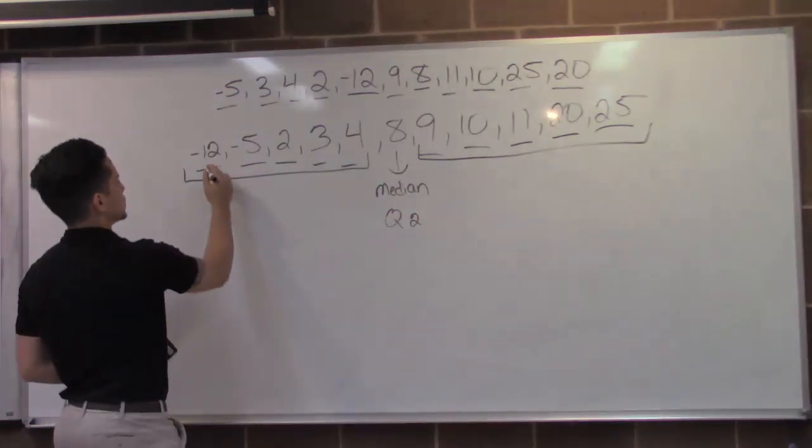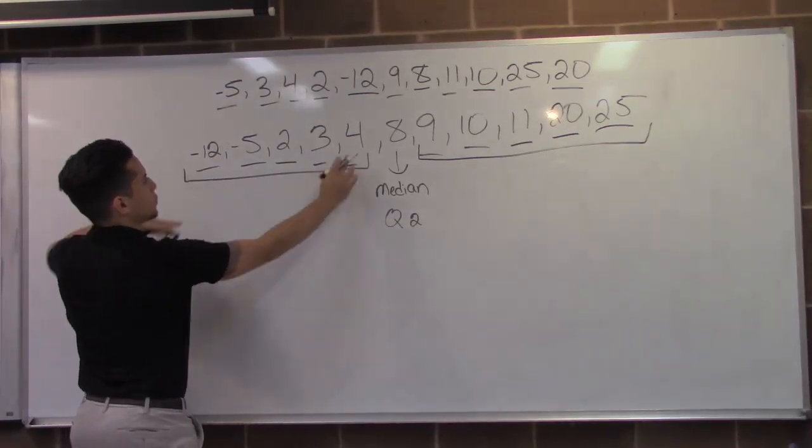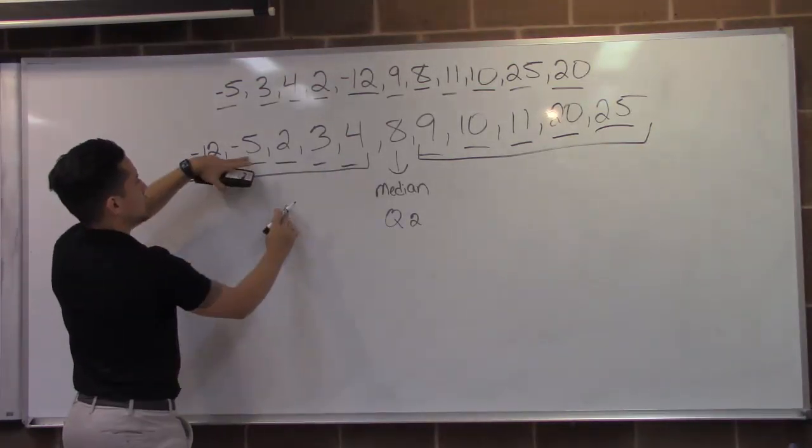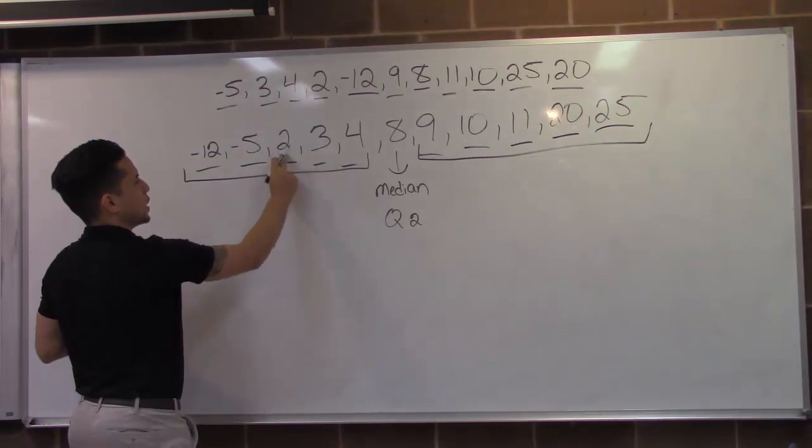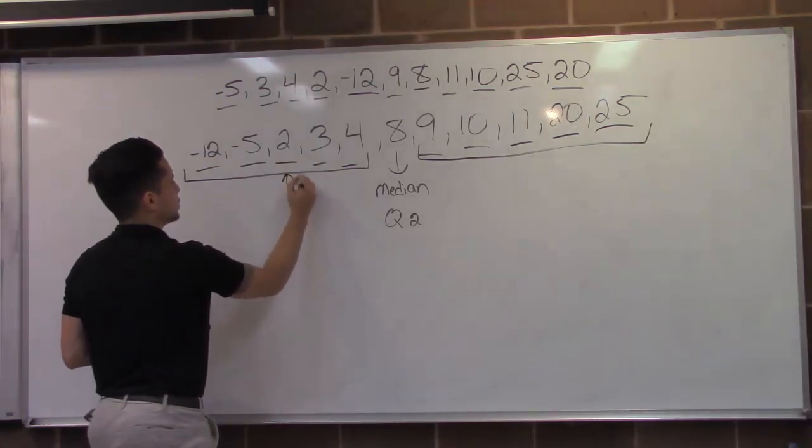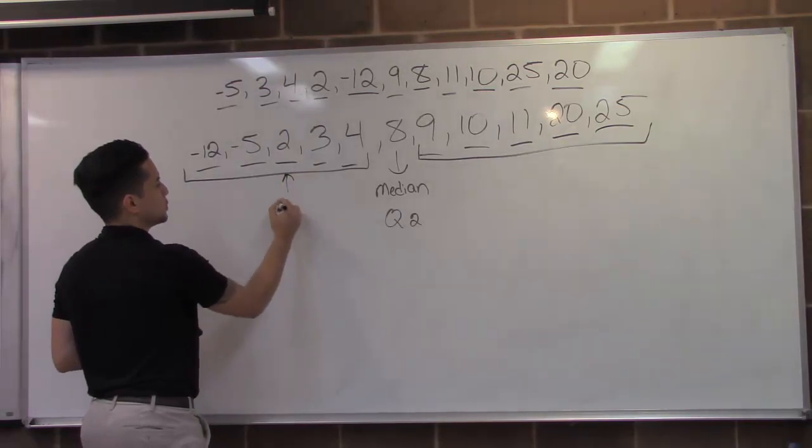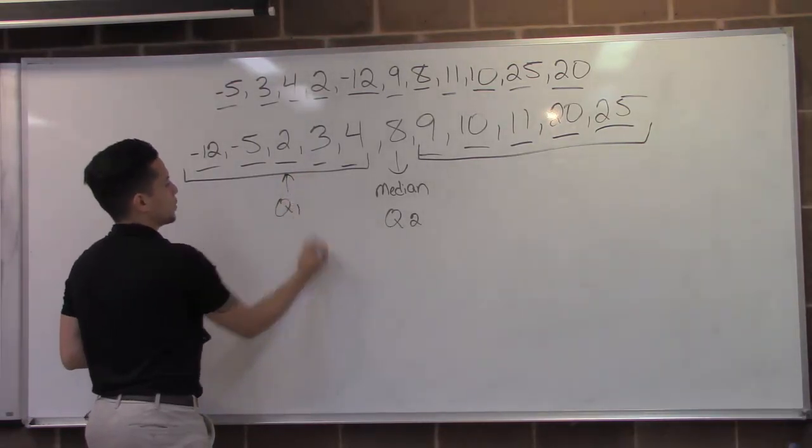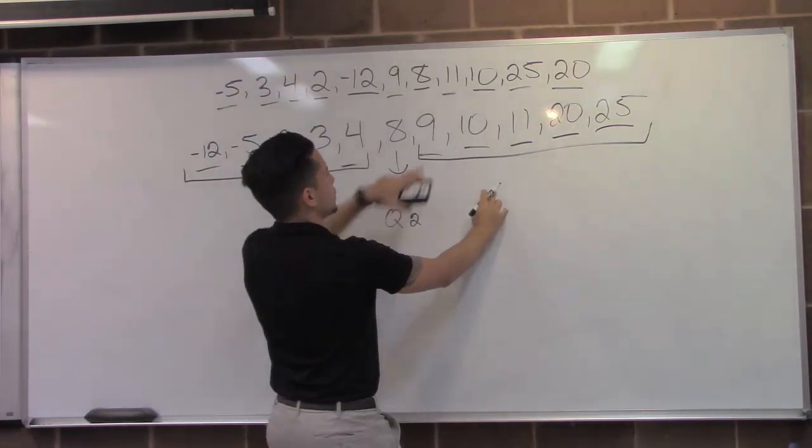I'm going to cancel out negative twelve, four, negative five, three and have two in the middle. So from here, two would represent quartile one.